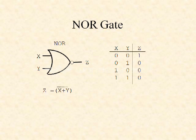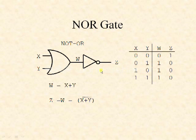Now let us see the NOR gate. It accepts more than one input and provides only one output. Here is a two-input NOR gate where x and y are the inputs and z is the output. The NOR gate is a combination of an OR gate and a NOT gate, indicated by the bubble. The output expression is z equals x plus y whole complement. The truth table shows it performs the inverse operation of the OR gate: if any input is 1, the output is 0; only if all inputs are 0 is the output 1. NOT plus OR gives a NOR gate.